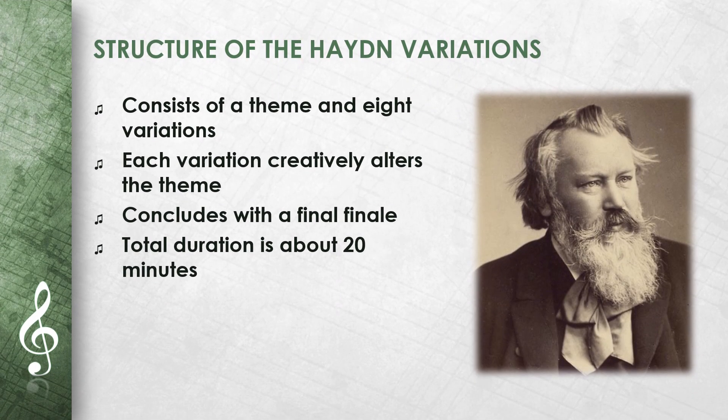The Haydn Variations consist of a theme and eight variations. The theme is a simple chorale with a clear melody. Each variation changes the theme in a new and creative way. After the eight variations, there is a finale. The work lasts about 20 minutes in total.